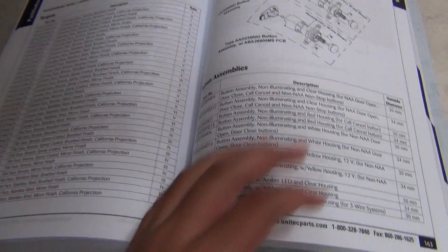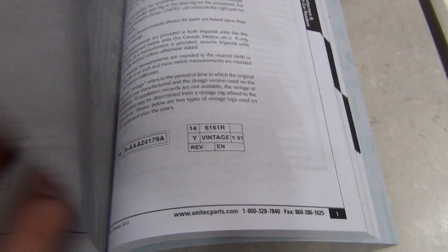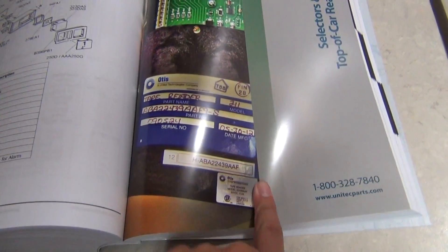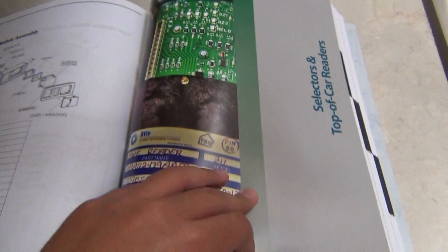So anyways, I guess that's going to be a quick look at the Unitek catalog. If you want to see this particular part of the catalog, be sure to leave a comment down below.